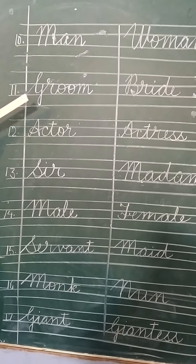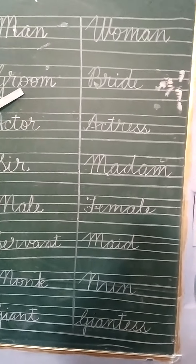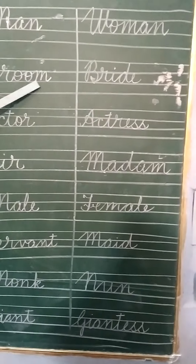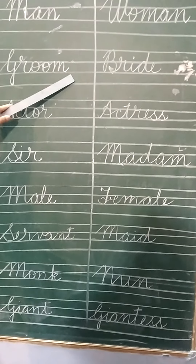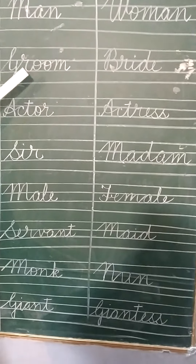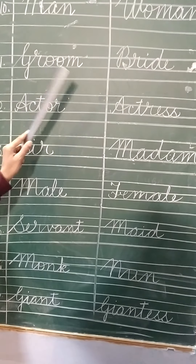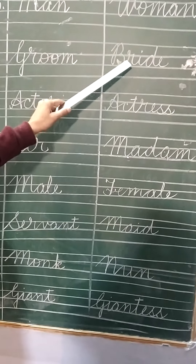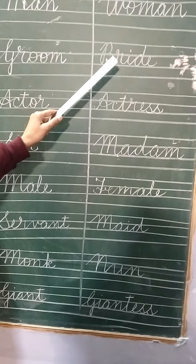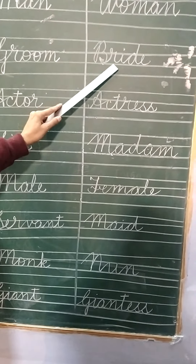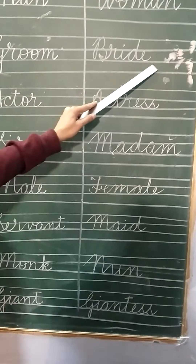Number 11 is groom. G-R-O-O-M, groom. Groom means dulha. And bride — you know very well. B-R-I-D-E, bride.